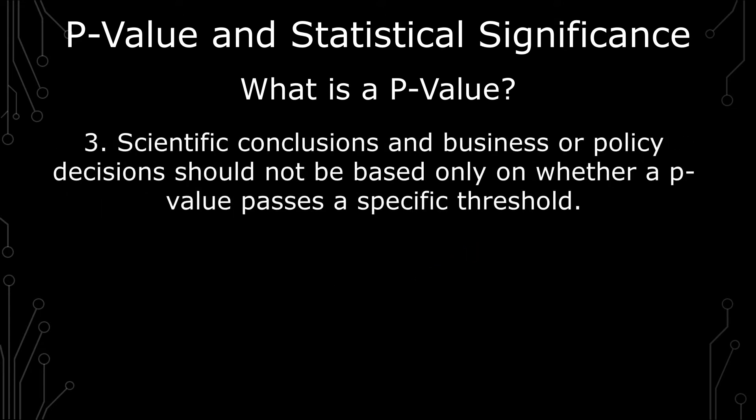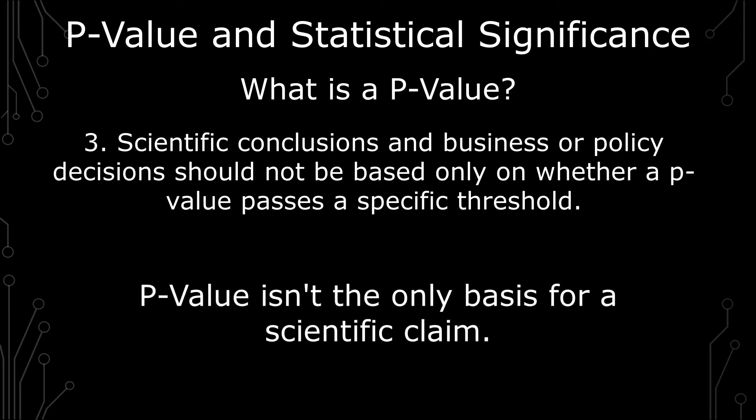The third principle is scientific conclusions and business or policy decisions should not be based only on whether a p-value passes a specified threshold. Another way of saying this is the p-value shouldn't be the only basis for a scientific claim. You need to look at other things such as the context or qualitative reasoning, the validity of statistical assumptions, and the quality of observations and measurements.